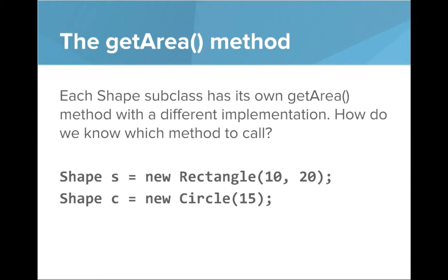So shape has a getArea method but it's abstract. How do we know which implementation to call?